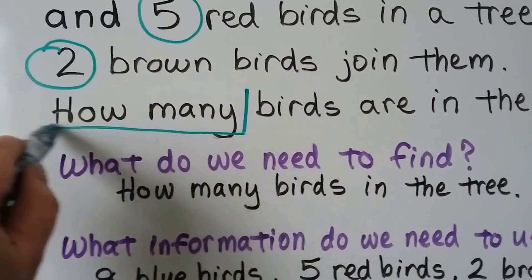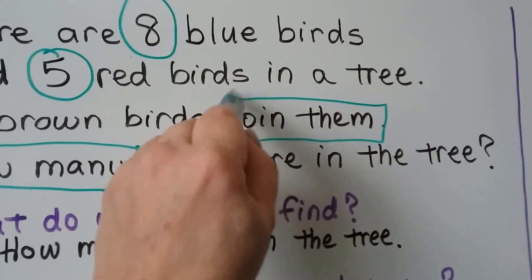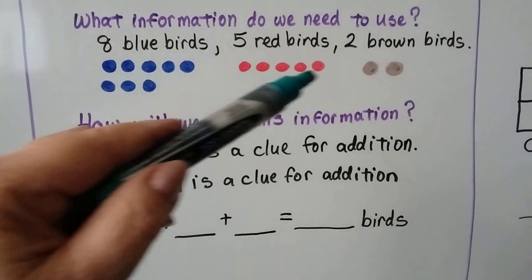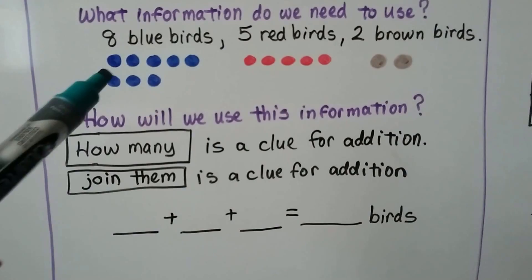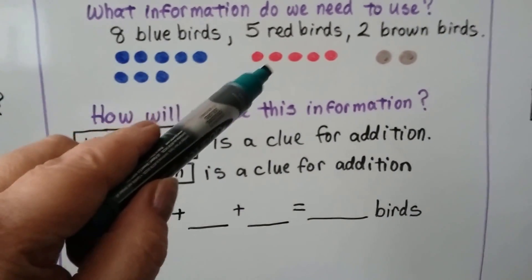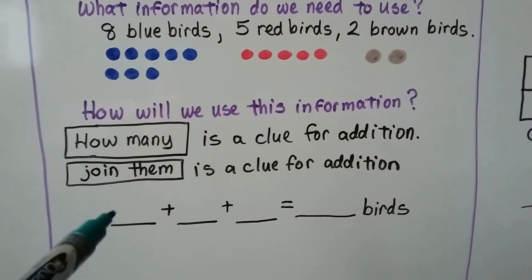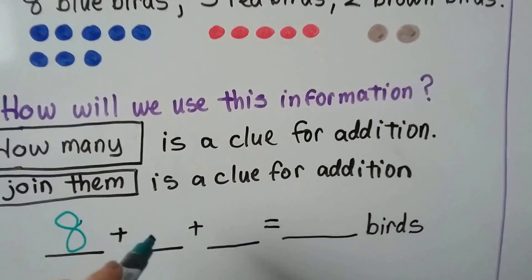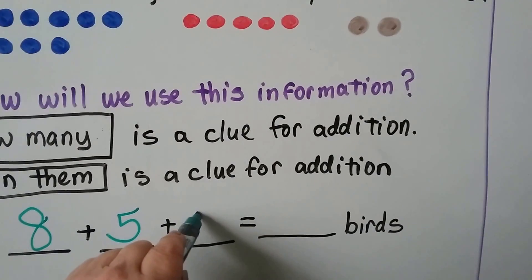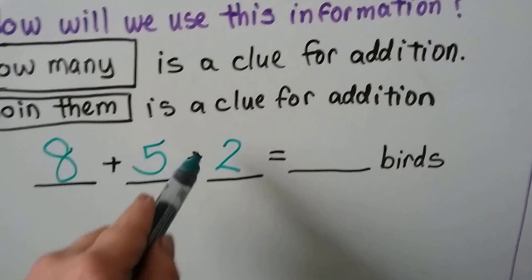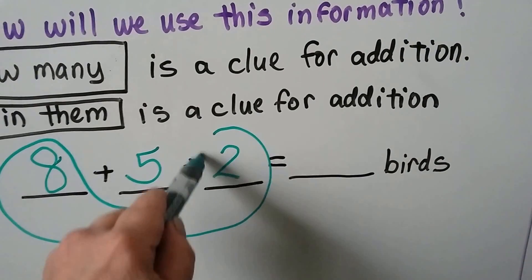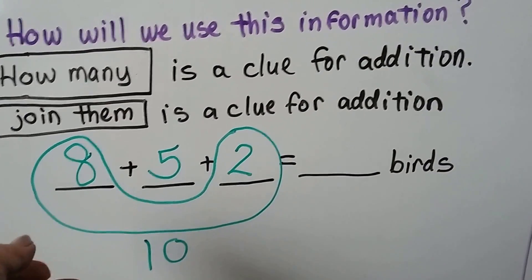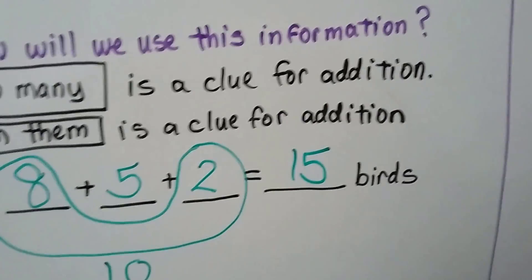It says 'how many' and 'join them' — that's addition. We can draw eight blue dots for the bluebirds, five red dots for the redbirds, and two brown dots for the brownbirds. We can count them: eight, nine, ten, eleven, twelve, thirteen, fourteen, fifteen. We can write an addition sentence: eight is the first addend, five is the next addend, and two is the last addend. We can make a ten by taking the two and the eight together, then add the five: ten, eleven, twelve, thirteen, fourteen, fifteen. Fifteen birds are in the tree.